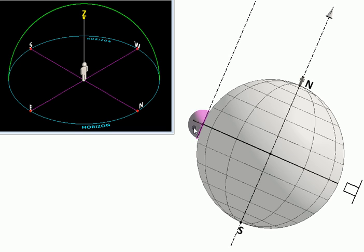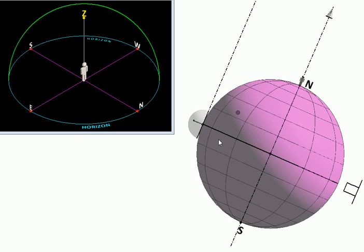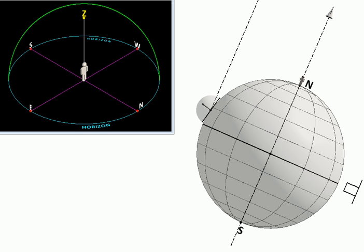Now suppose our observer at the equator decides to take a trip to the North Pole. As he moves northward, his horizon is going to change its direction because the horizon is always in a plane tangential to the Earth's surface. But that is not the case with the line of sight towards Polaris.